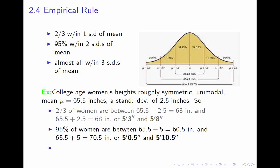Likewise, if we go up and down two standard deviations — two standard deviations is 5 inches — we add and subtract 5 inches from 65.5 and get 60.5 and 70.5, which is 5 feet and a half inch to 5 foot 10 and a half inches. This tells you that 95% of college-age women have a height between 5 foot and a half inch and 5 foot 10 and a half inches. Out of every 20 women, on average one should fall outside that range. You can think of people who fall outside that range as being unusual — a woman who's over 5 foot 10 and a half is unusually tall; a woman who's under 5 foot and a half inch is unusually short. But not shocking.